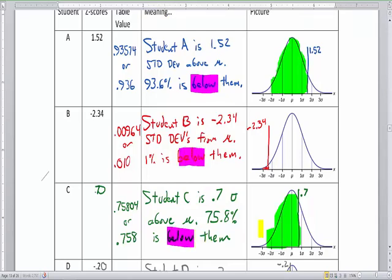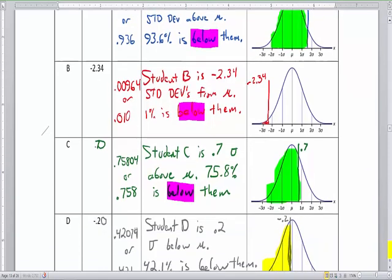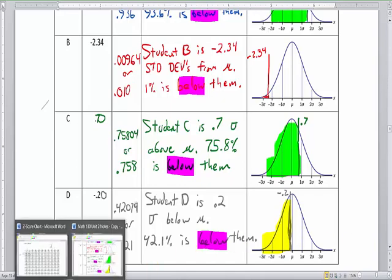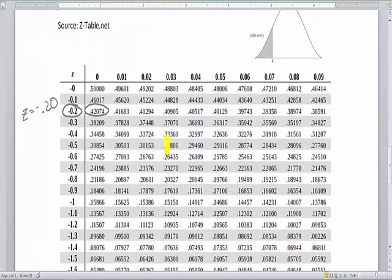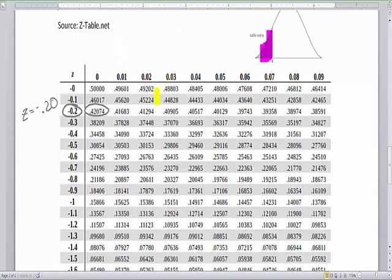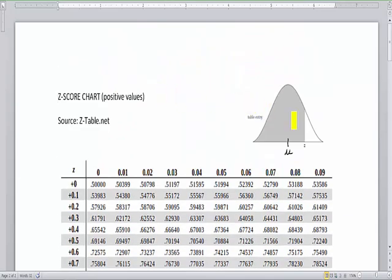These words all being the same tells you that the z-chart you're using always reads in percentages that are below your z-score. If we take a look at the z-chart, here's the negative page. Look where it's highlighting. It's always highlighting below z. And then look at this. Wow. A lot of highlighting below z. So now you should be able to read the z-chart like a champ.